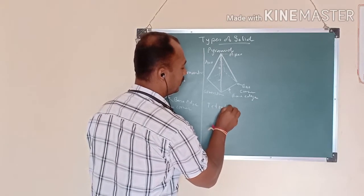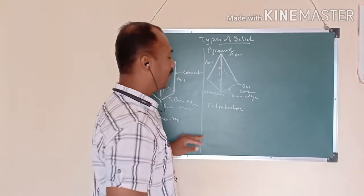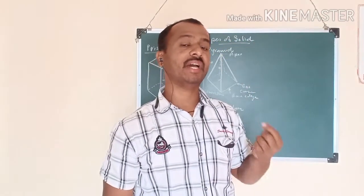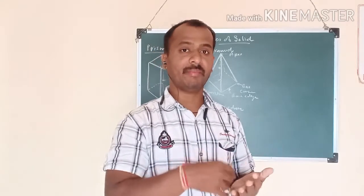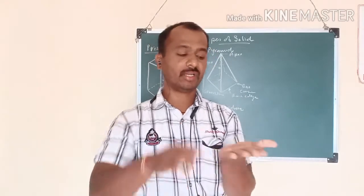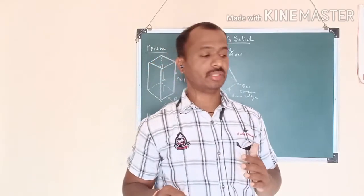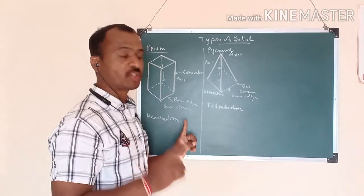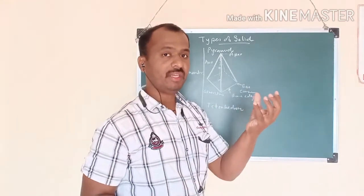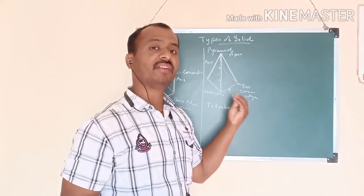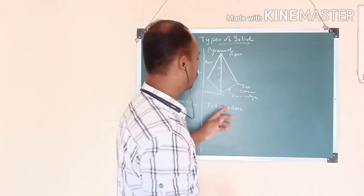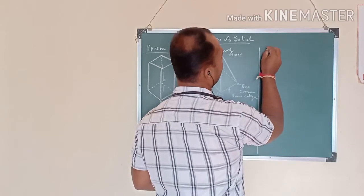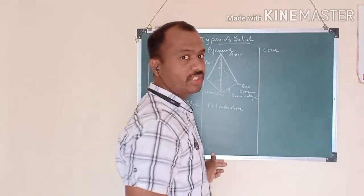In the tetrahedron, all faces of the pyramid are equal — meaning all faces are equilateral triangles. It is made of four equilateral triangles: one base and three side faces. That is called a tetrahedron. The next type of solid is the cone.